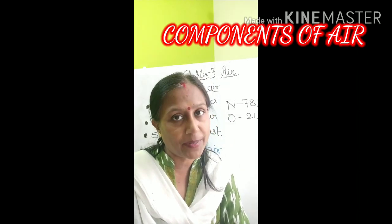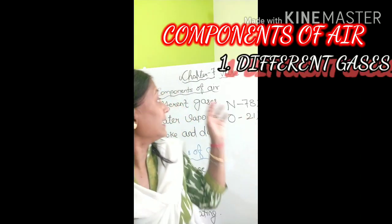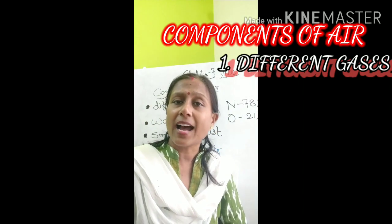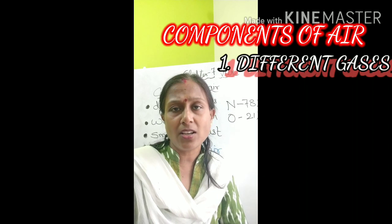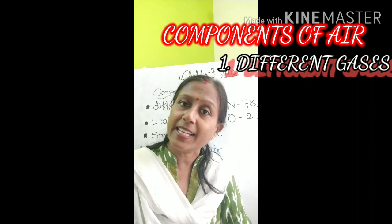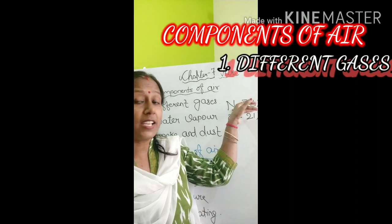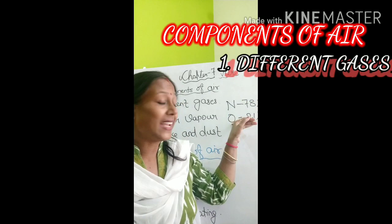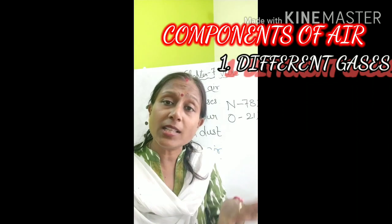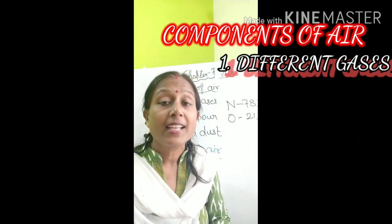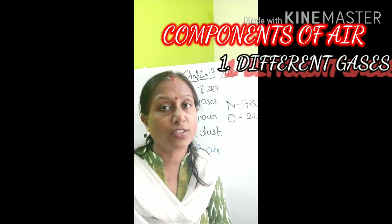Components means the things which are present in air. Air contains different gases such as carbon dioxide, oxygen, nitrogen, ozone, argon, and neon. But the major component of air is nitrogen, whose concentration is 78%, and the next one is oxygen, whose concentration is 21%. Among all the different gases, nitrogen and oxygen are present in maximum amount, so these two gases are the major components of air.